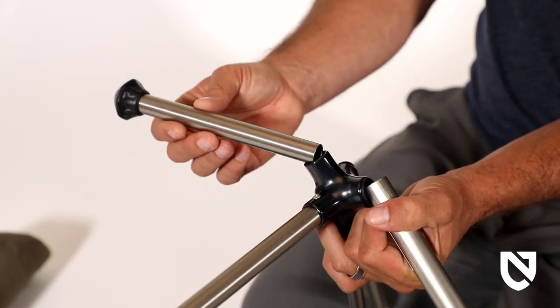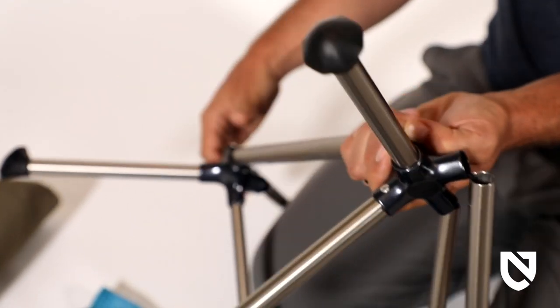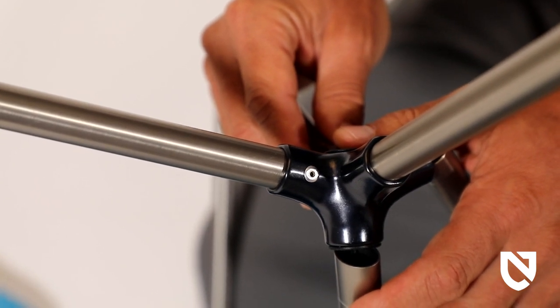To start, insert each front leg with round rubber feet into its corresponding hub. You'll note the back legs are permanently riveted to the hub, so you don't need to worry about those.